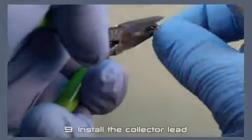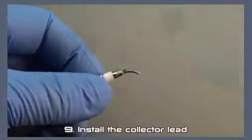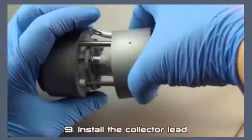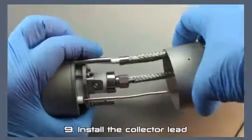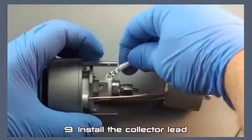Bend the lug down roughly 45 degrees. This will allow for a tighter installation. Thread the collector lead into the back body. Install the collector lead to the collector tab, parallel with the clamp ring.